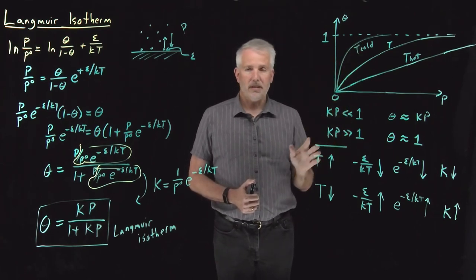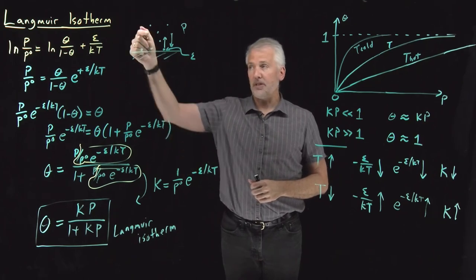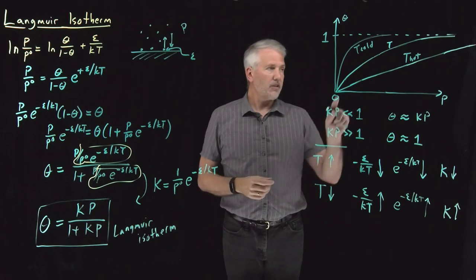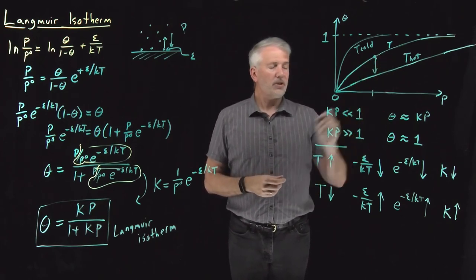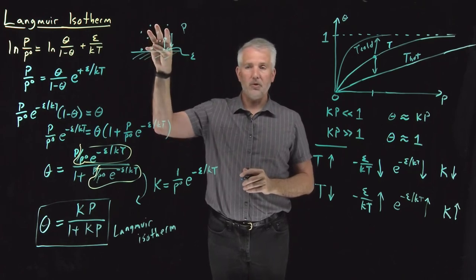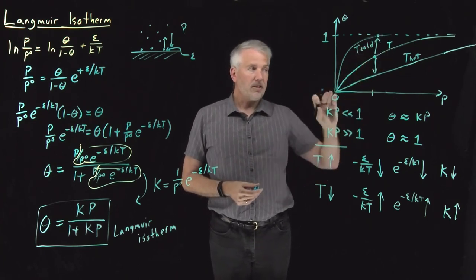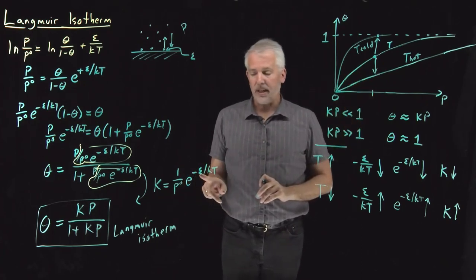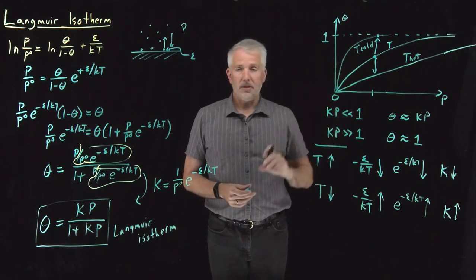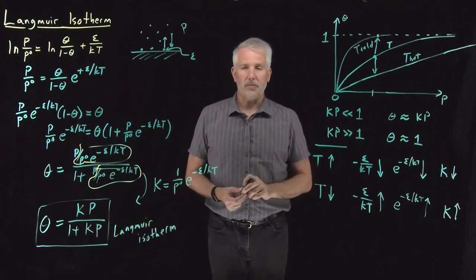So qualitatively this makes sense, and quantitatively we can predict exactly what's going on if we know the binding energy, temperature, and pressure of the system. We could move on to practical examples and discuss how this is done experimentally, but first I'm going to show you a different way of approaching the problem — a different way of understanding where the Langmuir isotherm comes from. That's coming up next.